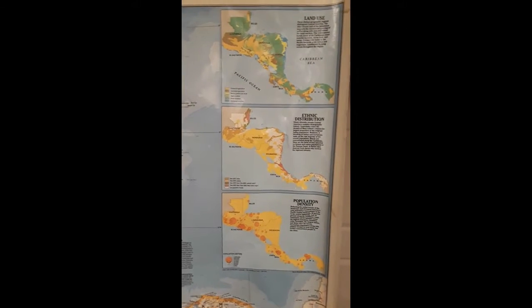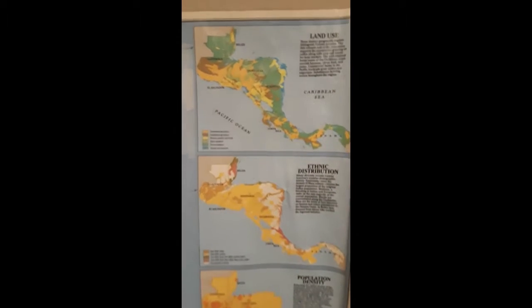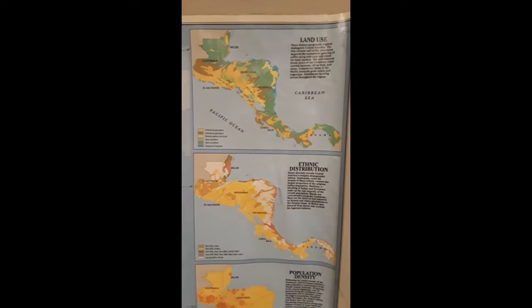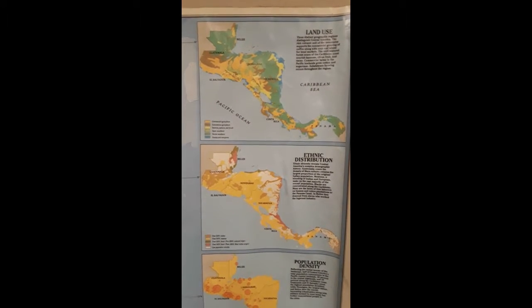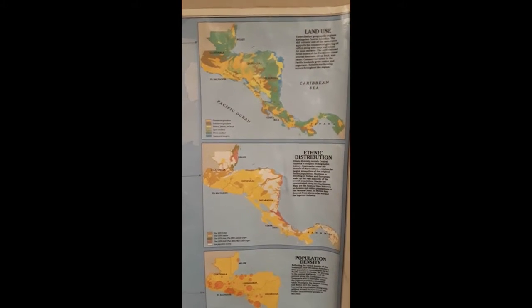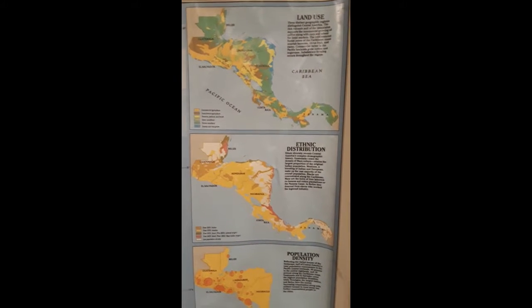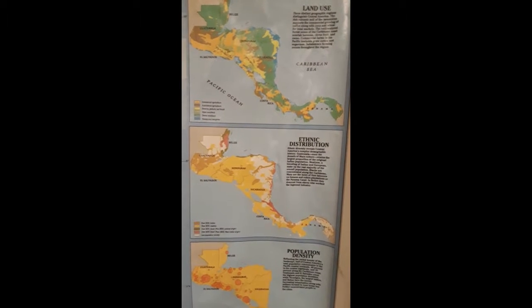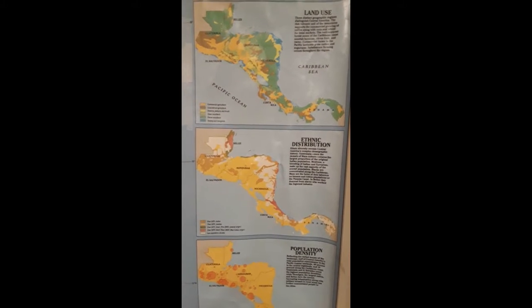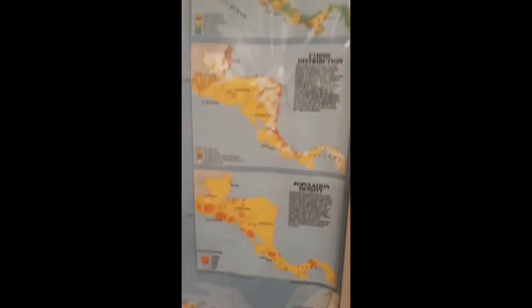You will also see this map has three smaller inset maps, which are not reference maps. The first map here is a land use map. This is what we call a qualitative thematic map, where each color represents a different type of land use. Right below that is another qualitative thematic map — this one is ethnic distribution, where each color represents a different ethnic group.